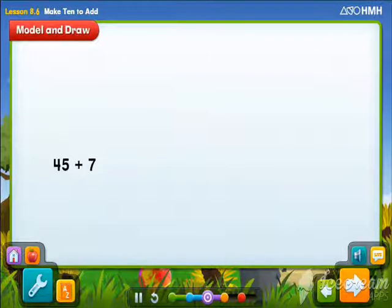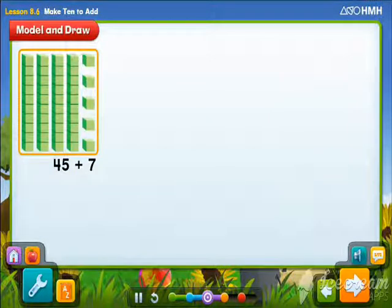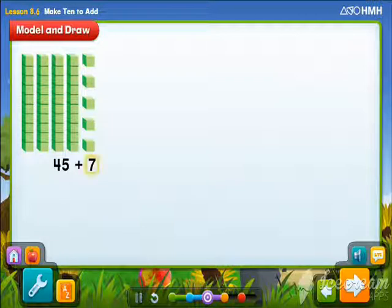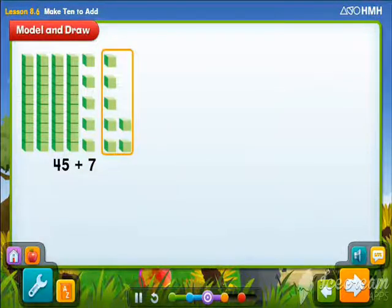Make a 10 to find 45 plus 7. First, model the addends. Start with 45. This is 4 tens and 5 ones. Now, show 7. This is 7 ones.